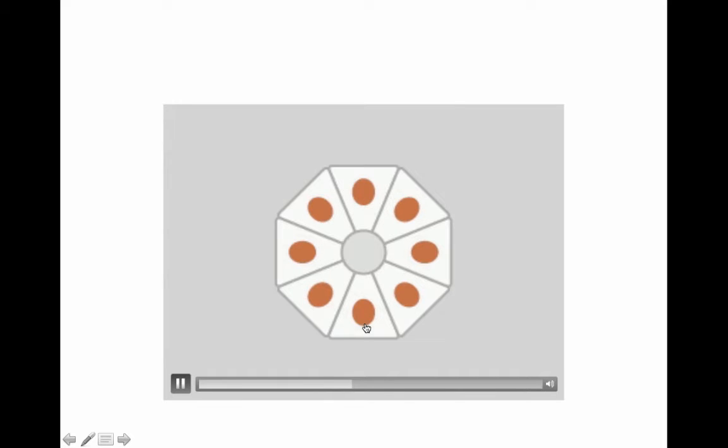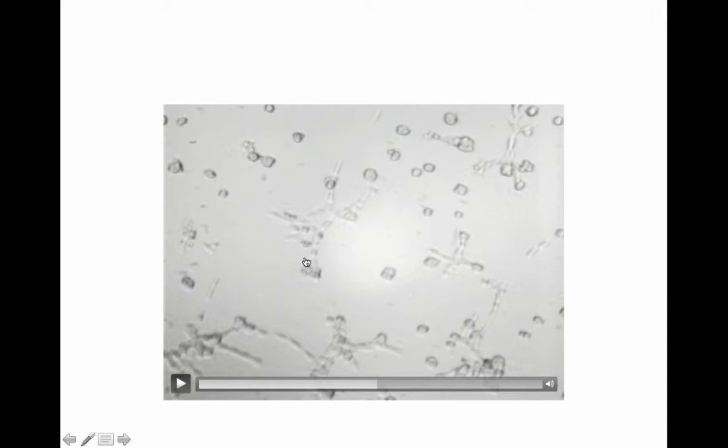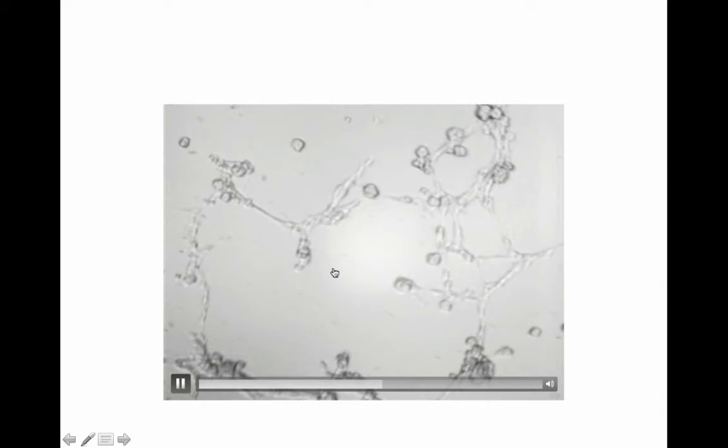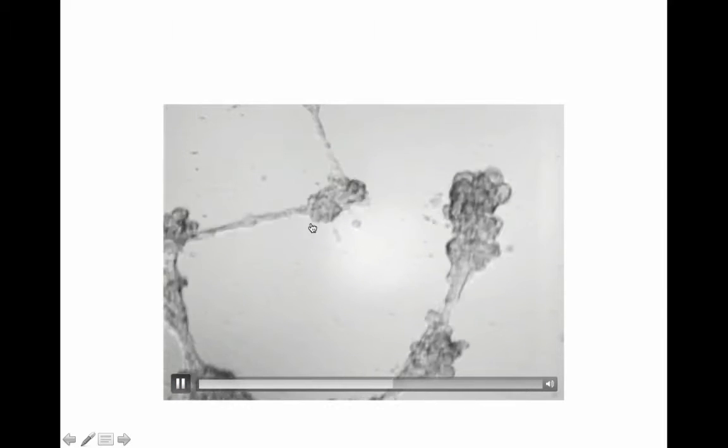Now we're looking at the breast cancer cells. You'll see they're growing much faster. They're no longer forming nice regular shaped cells. Rather, they're forming really large clumps of cells that aren't forming any predictable structure, and they keep growing until they form this large mass.